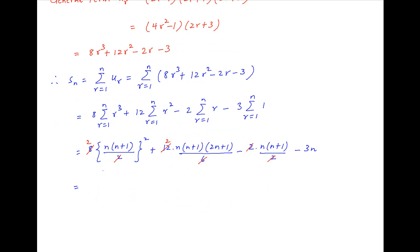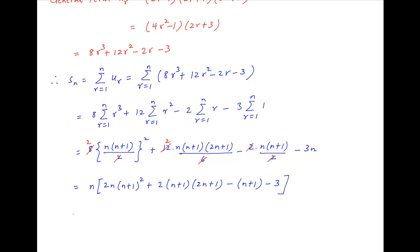The first term inside the brackets is 2N(N + 1)². The second term is 2(N + 1)(2N + 1). The third term is minus (N + 1), and finally minus 3 inside the brackets.